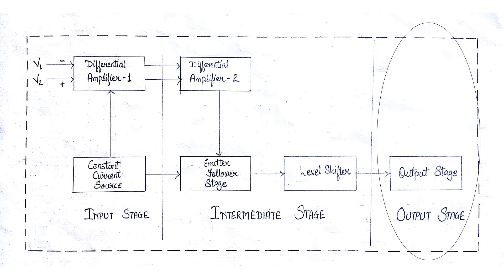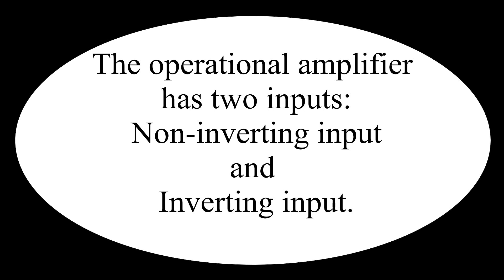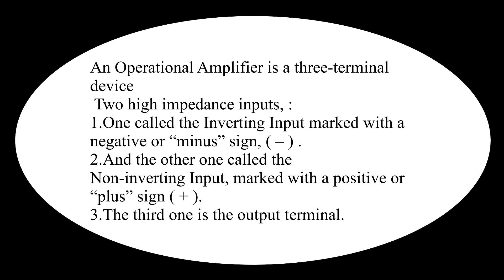An operational amplifier is basically a three-terminal device, consisting of two high-impedance inputs: one called the inverting input, marked with a negative or minus sign, and the other called the non-inverting input, marked with a positive or plus sign, and the third one is the output terminal.